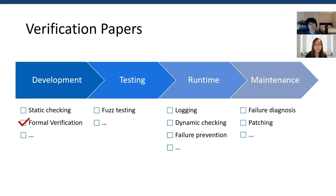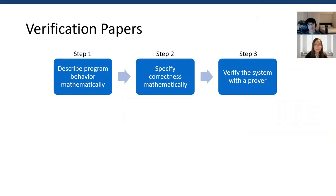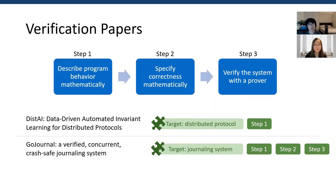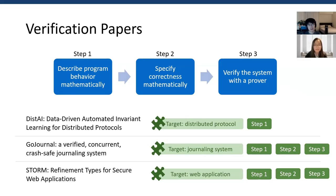We will introduce the five exciting papers in the correctness session one by one. First, there are three papers about formal verification. Let's review the process of doing formal proofs for programs: we need to describe the program behavior mathematically, specify the correctness of the program, and let a prover prove it. The first paper is DISP AI, related to reducing manual effort in specifying behaviors of programs by automatically generating invariants. The second paper is GoJournal, which goes through every step of implementing and proving a journaling file system. The third verification paper is STORM, which verifies data access-related policies in web applications using a typed system checked by a type checker.